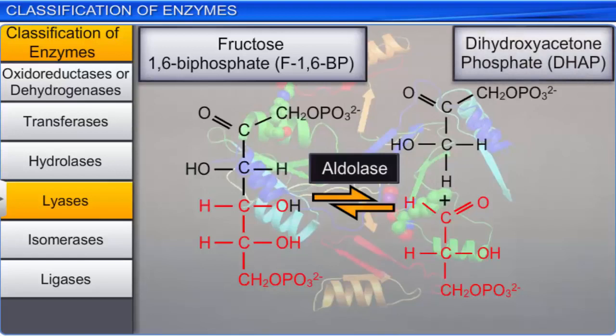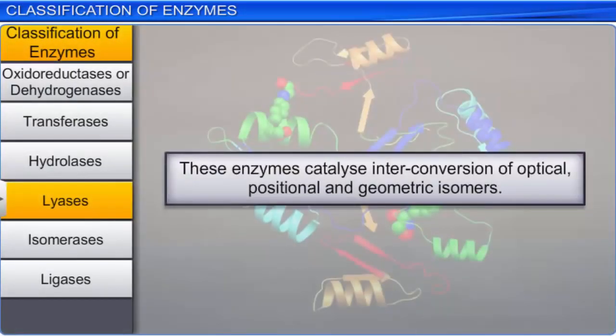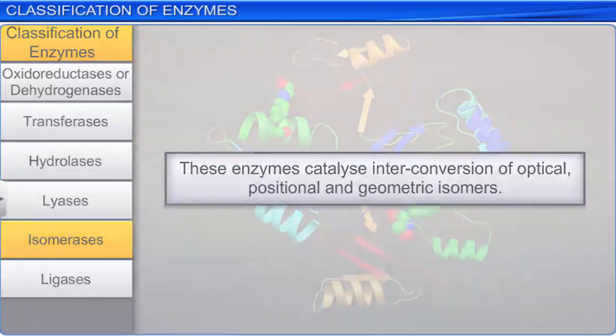The fifth class of enzymes called isomerases catalyzes the interconversion of optical, positional, and geometric isomers. For example, during glycolysis, phosphohexose isomerase catalyzes the conversion of glucose 6-phosphate to fructose 6-phosphate.